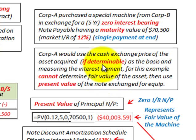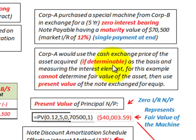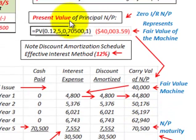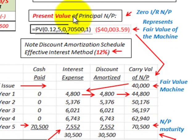If we were able to determine the value of this equipment, we'd use that to impute our interest and determine what type of interest we'd have on this note exchanged for the equipment. But in this case, we can't determine the value of the equipment, so we're going to use the present value of the note exchanged for the equipment.